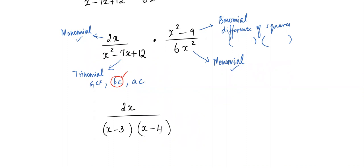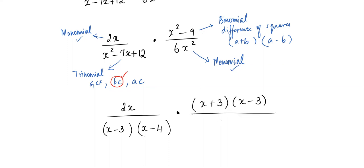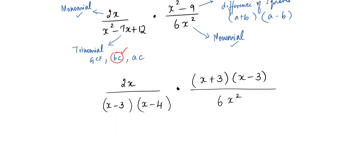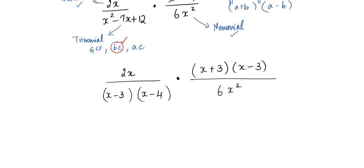For the difference of squares: x² minus 9 is x² minus 3², which factors as (x+3)(x−3) using the identity (a+b)(a−b). So b equals 3. The monomial needs nothing done. Now we're free to combine everything into a single fraction and cross-cancel, or we can cross-cancel directly — that's why it's called cross-canceling.